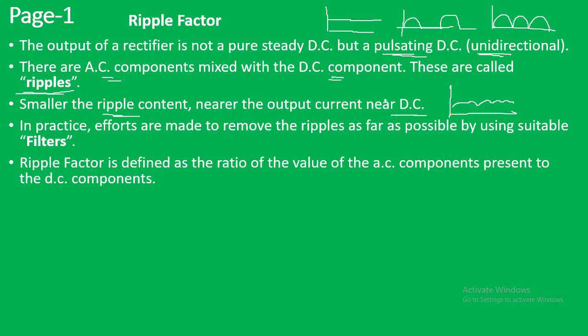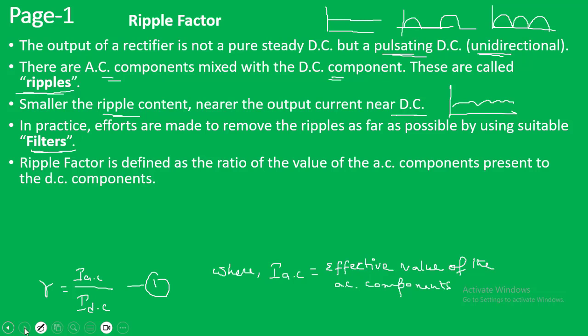We can reduce the ripples to a large extent by using another device followed by the rectifier, called a filter. Filters are not the topic of this lecture and will be taken up separately. The ripple factor is defined as the ratio of the AC component present in the output current to the DC component. It is denoted by gamma and is simply IAC divided by IDC, where IAC is the effective value of the AC components present in the output current.